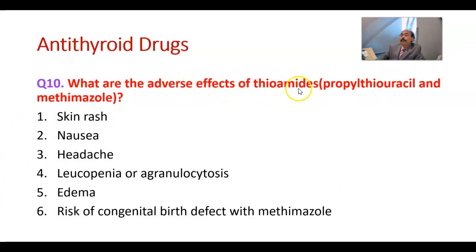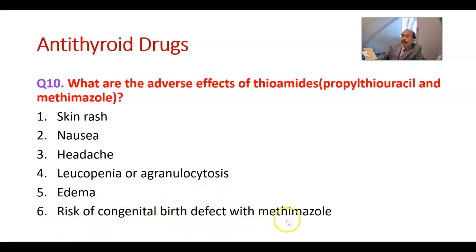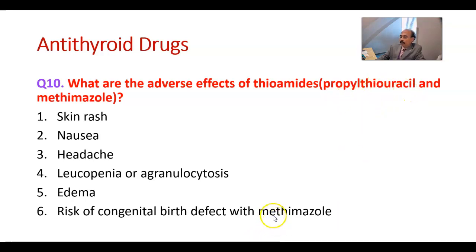What are the adverse effects of thioamides — propylthiouracil and methimazole? These include skin rash, nausea, headache, leukopenia, agranulocytosis, edema, and a risk of congenital birth defects with methimazole. Propylthiouracil may also cause liver damage. Propylthiouracil does not carry the same risk of congenital birth defects, but methimazole does carry that risk.